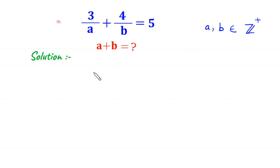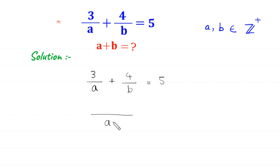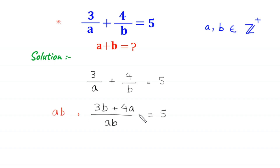So let us start. We have the given equation: 3 divided by a plus 4 divided by b is equal to 5. We take the LCM of a and b, which is ab. So ab divided by a is b, and b times 3 will become 3b; ab divided by b is a, and a times 4 will become 4a, equal to 5. We multiply both sides by ab, so this ab cancels out, and on the left-hand side we are left with 3b plus 4a is equal to 5ab.